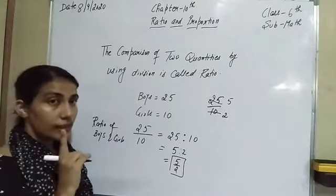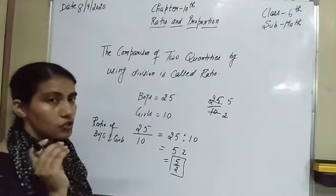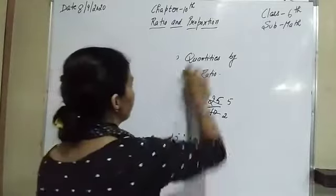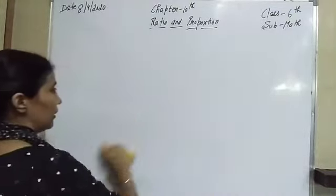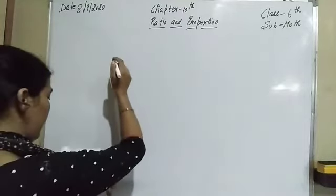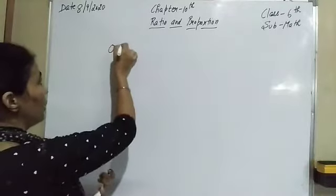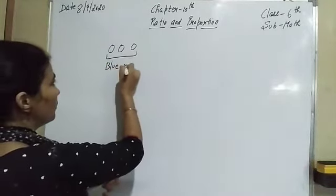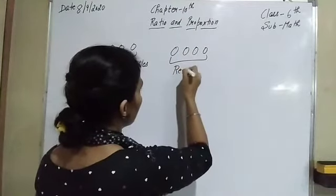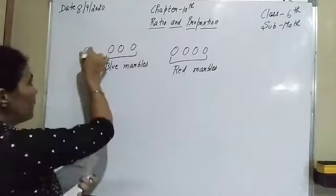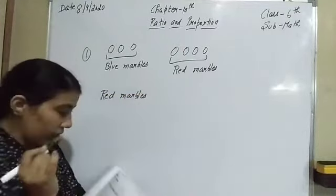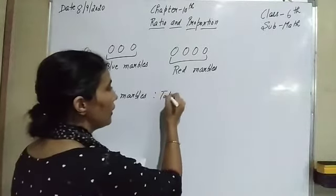Now let's start the first question of this worksheet so that you can understand in which way we can solve all questions regarding ratios. The first question: here are 3 blue marbles and here are 4 red marbles. In the first part of the question, the statement is: find the ratio of the number of red marbles to the total number of marbles.